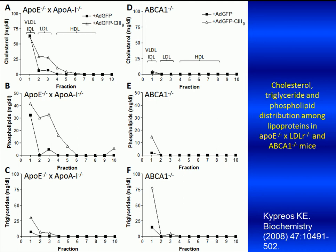The increase in LDL and HDL cholesterol levels was accompanied by an increase in free cholesterol levels, consistent with the role of ApoC3 as an inhibitor of the plasma enzyme lecithin-cholesterol acyltransferase, or LCAT. Consistent with the increased cholesterol levels, phospholipid levels were also significantly elevated, mainly in LDL, IDL, and HDL fractions of these mice, while there was only a modest increase in their level of VLDL and IDL fractions.